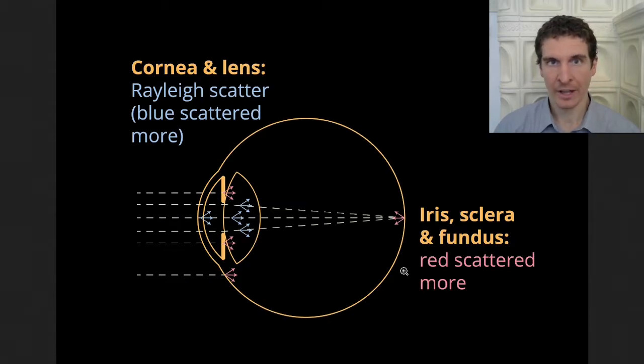In general, aging affects both of these mechanisms negatively, so the cornea and the lens yellows, and thereby more blue light is going to be scattered. But the pigmentation of the eye also decreases, so more red light is going to be scattered. But for everybody, blue light is scattered more within the eye than yellow light.